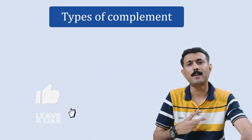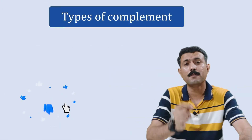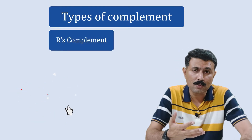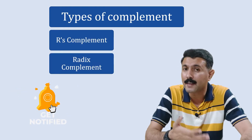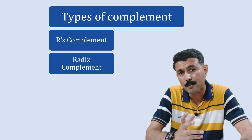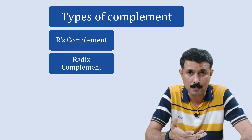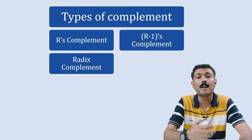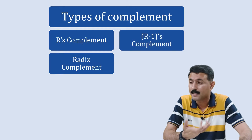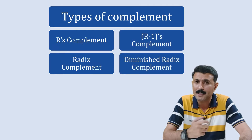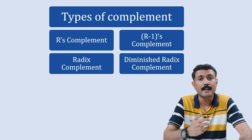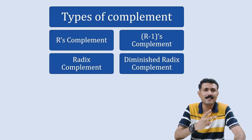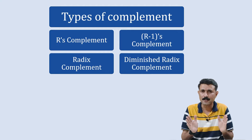Complements are of two types. The first is r's complement, also known as the radix complement or base complement. The second type is r-1's complement, known as the diminished radix complement or diminished base complement. These are the two complements for any number system.